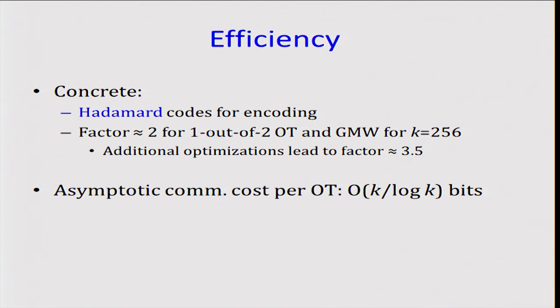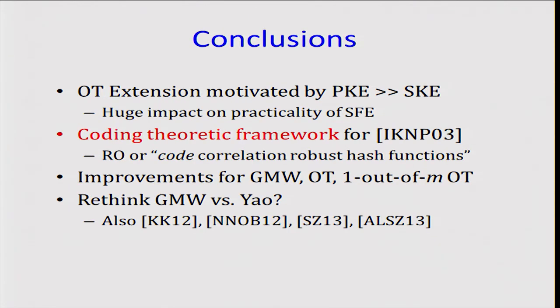I think this was also independently discovered by Ashraf et al., which is going to appear in CCS later this year. We also improved the asymptotic cost over IKNP per OT. In IKNP, it used O of K bits, whereas for L equals one, we used O of K over log K bits.